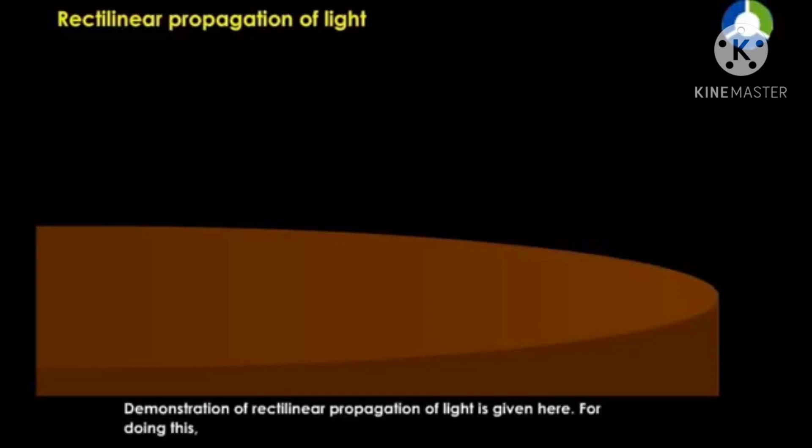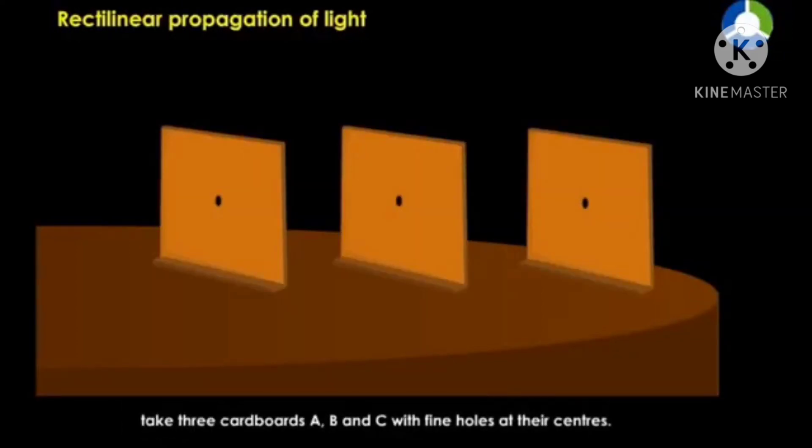Demonstration of rectilinear propagation of light is given here. For doing this, take three cardboards A, B, and C with fine holes at their centers.